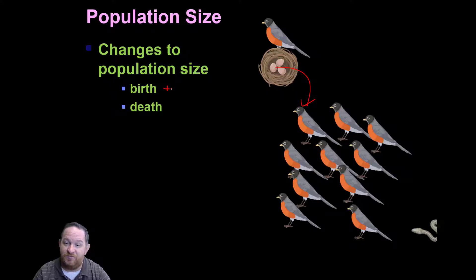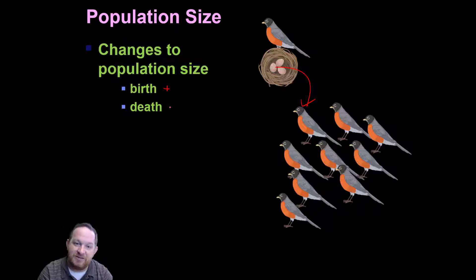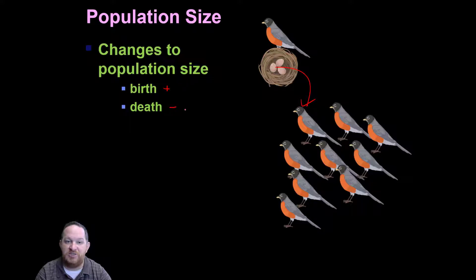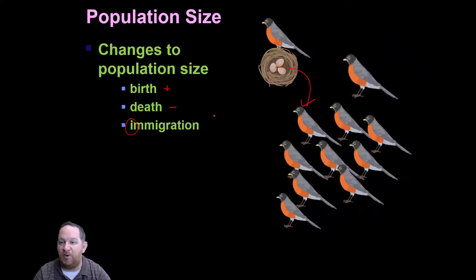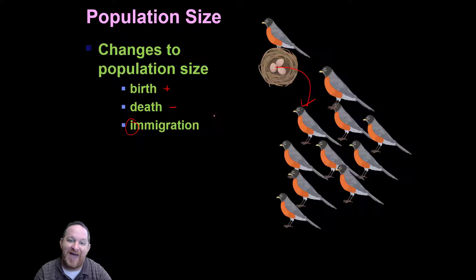Death, then — see a snake come in, and then the bird's dead. That subtracts from a population. Birth adds to population size; death subtracts from population size — pretty easy to understand at this point. The other things that can happen to a population are immigration and emigration. Think immigration — think coming in: a bird flies in, it's added to the population.